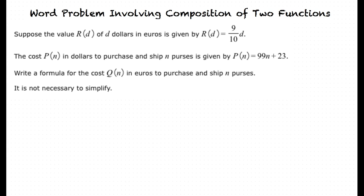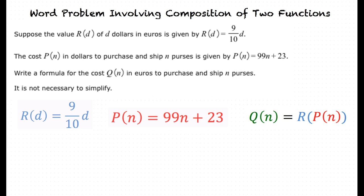We do this through taking the composition of r with p. Now that we have r of d equals 9 over 10 times d along with p of n equals 99 times n plus 23. When we take the composition of r with p, we get the formula q of n equals r of p of n.